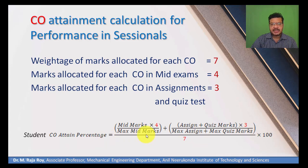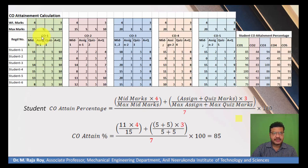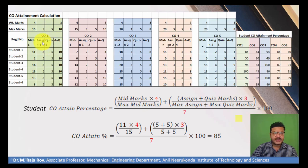To explain this with an example, consider a class of 6 students with 5 COs: CO1 through CO5. In mid-1 exam, marks allocated for CO1 are 15. In assignment 1, marks allocated for CO1 are 5. In quiz 1, marks allocated for CO1 are 5. So total assignment plus quiz marks for CO1 are 10.